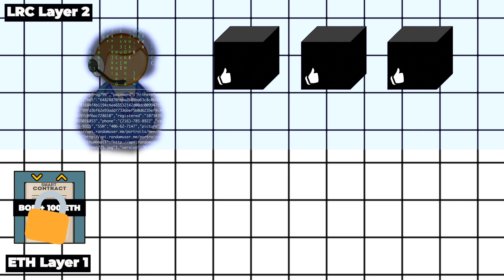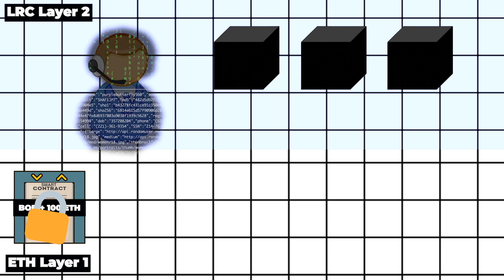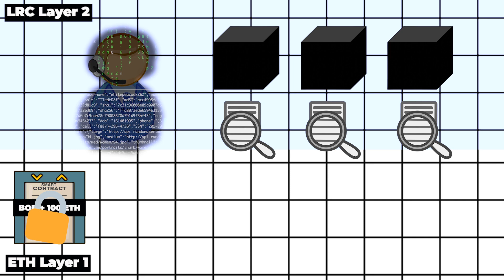To do this, it generates a cryptographic proof for every single block. This proof mathematically proves that each transaction in the block was correctly authorized by respective owners and that the balances were updated in the right way.